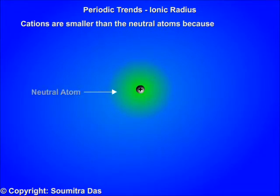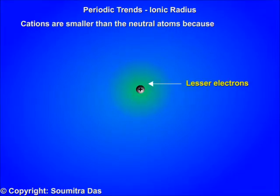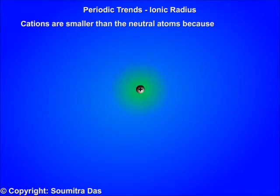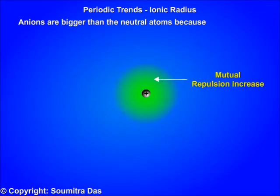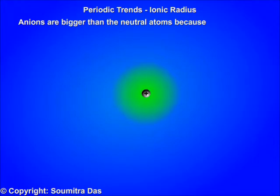Cations are smaller than neutral atoms because when an atom loses an electron, the nuclear charge pulls the lesser number of electrons towards it, and the lost electron no longer shields the other electrons, so the remaining electrons come closer to the nucleus. Anions are bigger than neutral atoms because when an electron is added to the shell, the mutual repulsion between electrons increases, and the added electron contributes more to the shielding effect, causing the shell to expand.